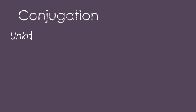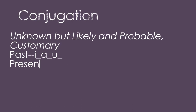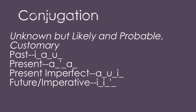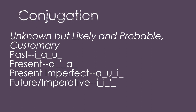The unknown but likely or probable mood — also used for customary things — would be conjugated as follows: irashus in the past; arshas in the present; arshas in the present imperfect; and irish in the future or the imperative.